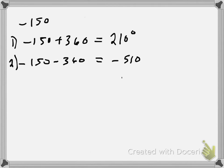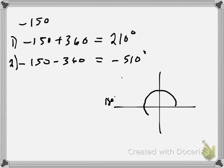I'll just graph the 210-degree one. Starting at the initial side — from there to there is 180 degrees, then go 30 more, about right there. So that angle right there is 210 degrees.